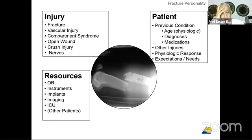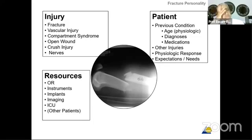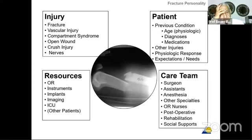What about the resources? What type of OR do you have? What type of instruments do you have? What type of implants do you have to treat this condition? If I suggest nailing for a femur fracture, but you don't have a C-arm or even a nail, you have to change the type of osteosynthesis — it could be a plate. The type of imaging matters; if you don't have a C-arm, you cannot do closed reduction with nailing. Also consider ICU availability and whether other patients have priority.